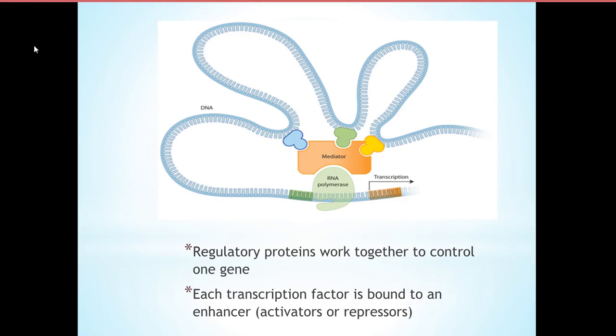So combination control is a group of regulatory proteins that work together to control one single gene. Remember, this is multiple proteins controlling one gene. All of the regulatory proteins are assessing their environment and stating their opinion, either yes, transcribe, or no, don't transcribe.